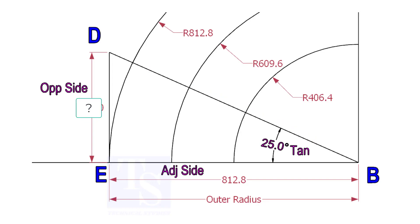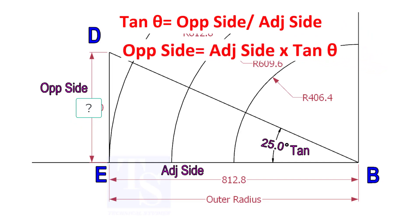To draw the line DB, we need to know the length of the line ED. To calculate ED, we need to apply the formula: tan theta equals opposite side divided by adjacent side. Opposite side equals adjacent side multiplied by tan theta.